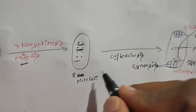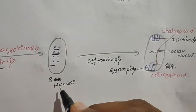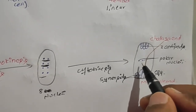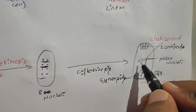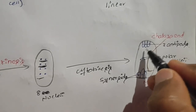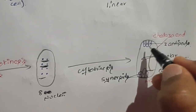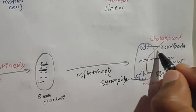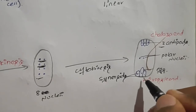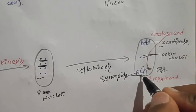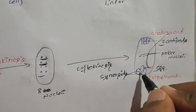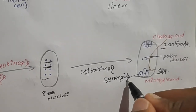Now cytokinesis takes place. Out of the eight nuclei, six nuclei take cytoplasm and become cells, while the remaining two nuclei do not take cytoplasm. Three cells move towards the chalaza end and are known as the antipodes. The remaining three cells come to the micropyle end, and the central cell among these three is the egg. Beside the egg are two cells known as the synergids.